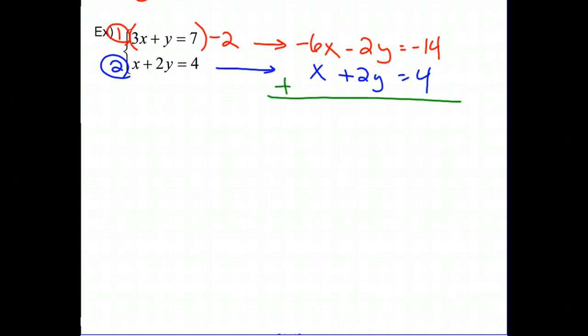So now I have everything lined up and my Y's are going to be eliminated when I add. So adding these together, negative 6X plus X is negative 5X. Now that I changed, my Y's cancel. And negative 14 and 4 is a negative 10. Finishing up to solve for X, I get X equals positive 2.